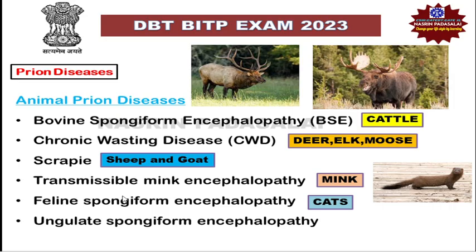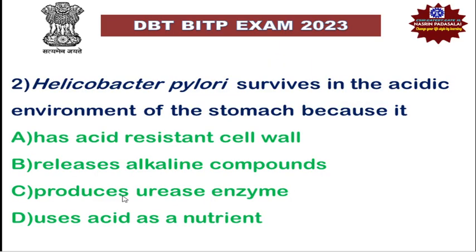Animal prion diseases include Bovine Spongiform Encephalopathy, which affects cattle; Chronic Wasting Disease, which affects deer, elk, and goose; Scrapie, which affects sheep and goat; Transmissible Mink Encephalopathy, which affects mink; Feline Spongiform Encephalopathy, which affects cats; and Ungulate Spongiform Encephalopathy, which affects ungulates like horses.